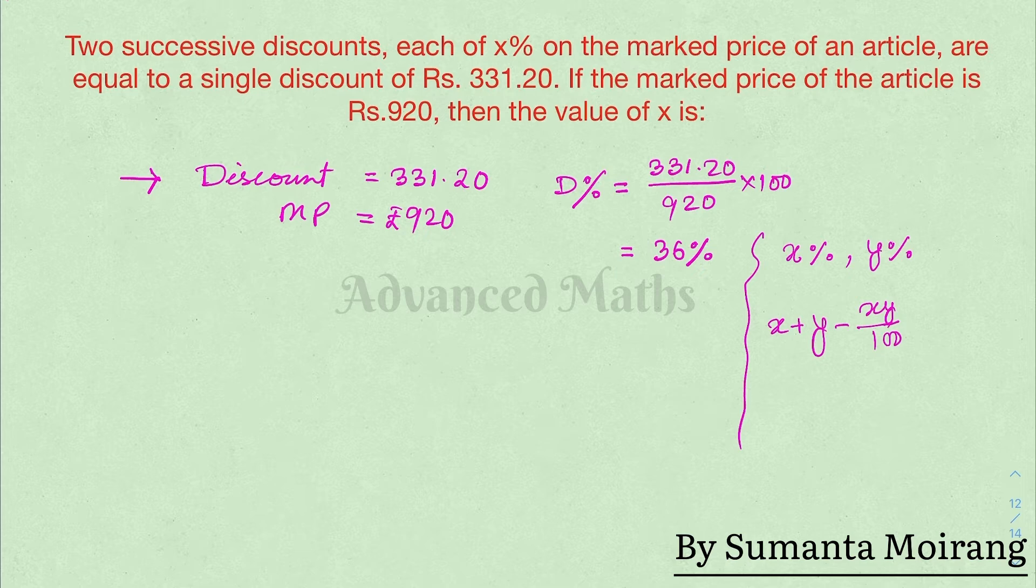Since both discounts are x percent, the single discount formula is x plus x minus x squared divided by 100, which equals 36 percent.